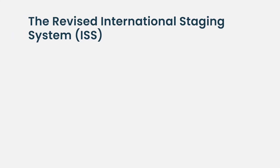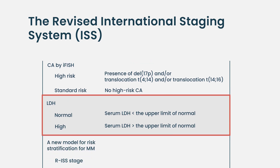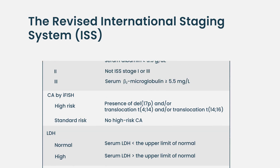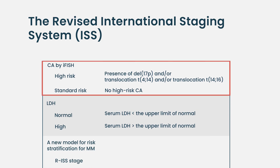We and others learned that there are additional factors, like LDH — a protein we all have in our blood that can go up in certain cancers, including multiple myeloma. So people started taking into consideration LDH level. Another important factor is cytogenetics — those chromosomal abnormalities. The revised ISS international staging system took into account not just beta-2 microglobulin and albumin, but also chromosomal abnormalities on FISH studies, as well as LDH level.